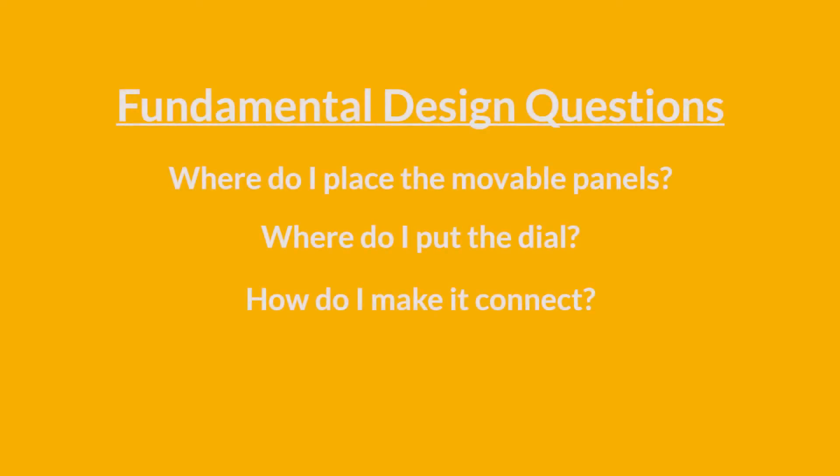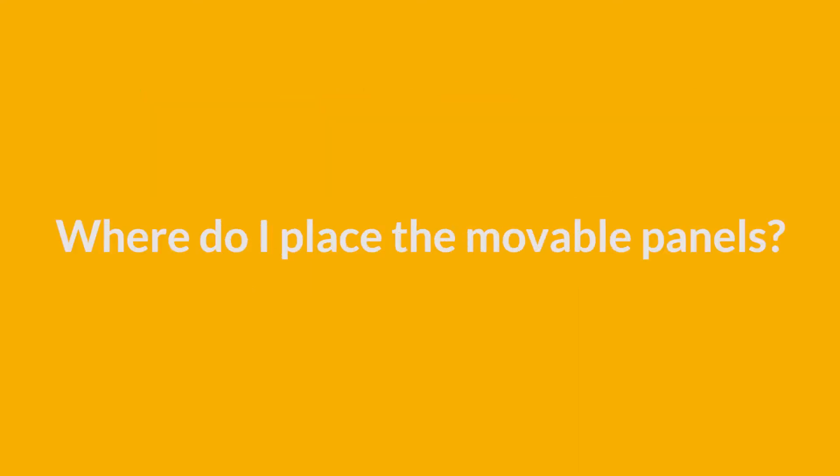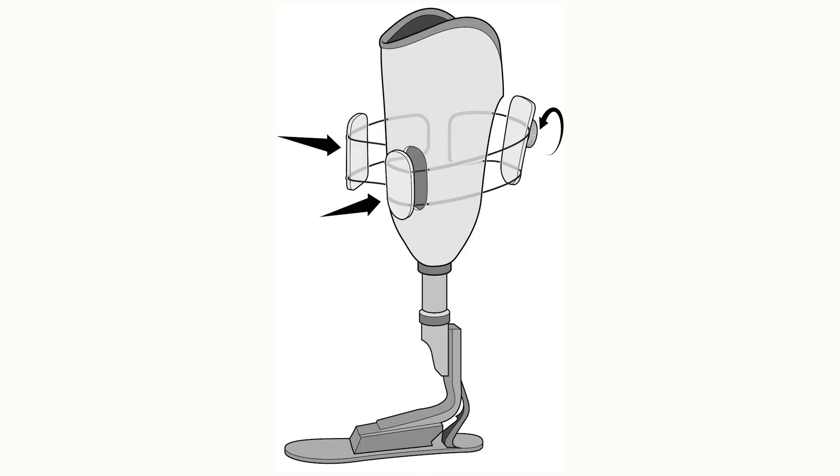Before we start, let's go back to the fundamental design questions. Where do I place the movable panels? Remember, the basic three-panel design we talked about in the last video positions pads on either side of the tibia, and on the gastroc area. This design allows for adjustability in overall fit, without transferring any pressure to the distal tibia.